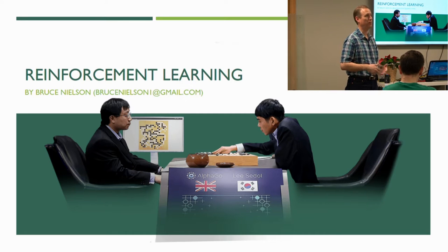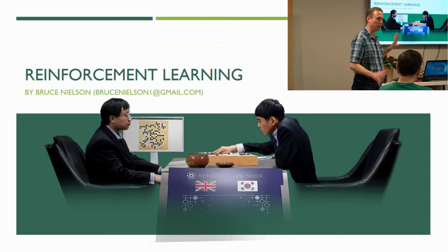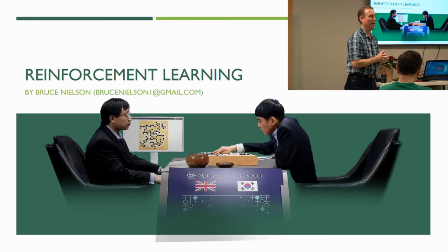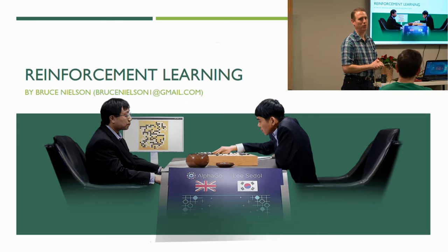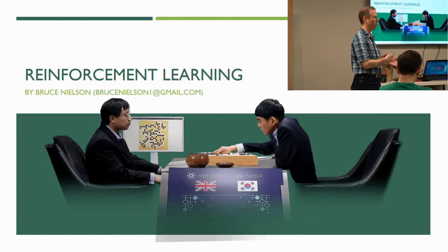I'm currently a student with Georgia Tech for the online Masters of Computer Science program, and my specialization is in machine learning. This is part of what I learned from my first couple classes. The machine learning for trading class is particularly where I got a lot of this from. Because of that, I'm not allowed to show actual code because of honor code reasons, so I'm going to explain the algorithm. I think I've explained it well enough you could implement it from the explanation — that's legitimate.